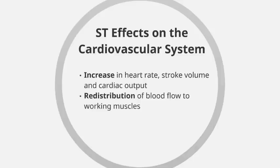Moving on to the short-term effects on the cardiovascular system, we have an increase in heart rate, stroke volume, and cardiac output. This is because of the increased demand for oxygen by the muscles — the cardiovascular system needs to speed up its delivery through the blood. To do this, the heart must beat more often and pump more blood per beat. Beating more often is an increase in heart rate; pumping more blood per beat is an increase in stroke volume. Collectively, these result in more blood being pumped around the body per minute, which is an increase in cardiac output.